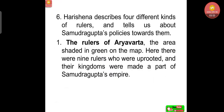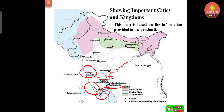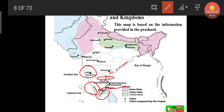Harishena describes four different kinds of rulers and tells us about Samudragupta's policies towards them. The first kind: the rulers of Aryavarta, the area shaded in green on the map. There were nine rulers in this region. They were uprooted and their kingdoms were made a part of Samudragupta's empire.